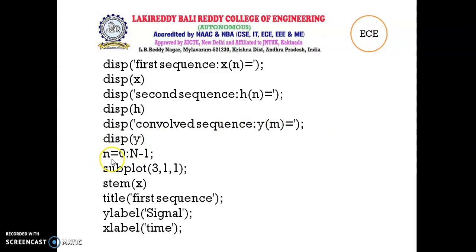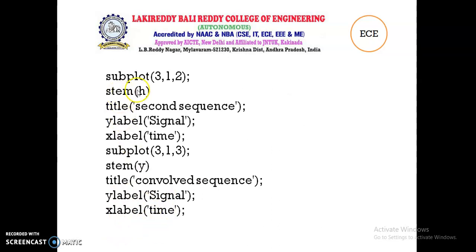N equals to 0 to N minus 1. Subplot 3, 1, 1: stem of X, which is the first sequence. Y label signal, X label time. Subplot 3, 1, 2: stem of H, which is the second sequence. Y label signal, X label time.